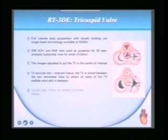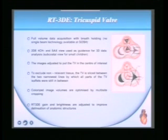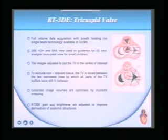Full-volume data acquisition with breath-holding is done for transthoracic echo, as in the GAUSH trial. For trans-esophageal echo, your patient is already anesthetized, and a 2-chamber or 4-chamber view is enough. The image is adjusted keeping your tricuspid valve right in the center, and to exclude any non-relevant tissue from above and below the valve, you begin cropping on the Q-Lab, slicing between the narrowest lines so that all parts of the tricuspid valve leaflets can be seen. Colorized images on 3D zoom or volume acquisition are then gained, with 3D gain and brightness adjusted to further improve the anatomic valve structure.